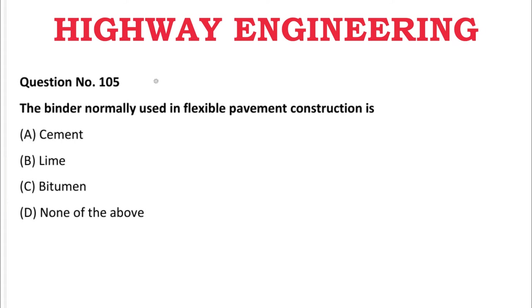Next question: The binder normally used for flexible pavement construction is — A: cement, B: lime, C: bitumen, D: none of the above. The correct answer is C, bitumen.